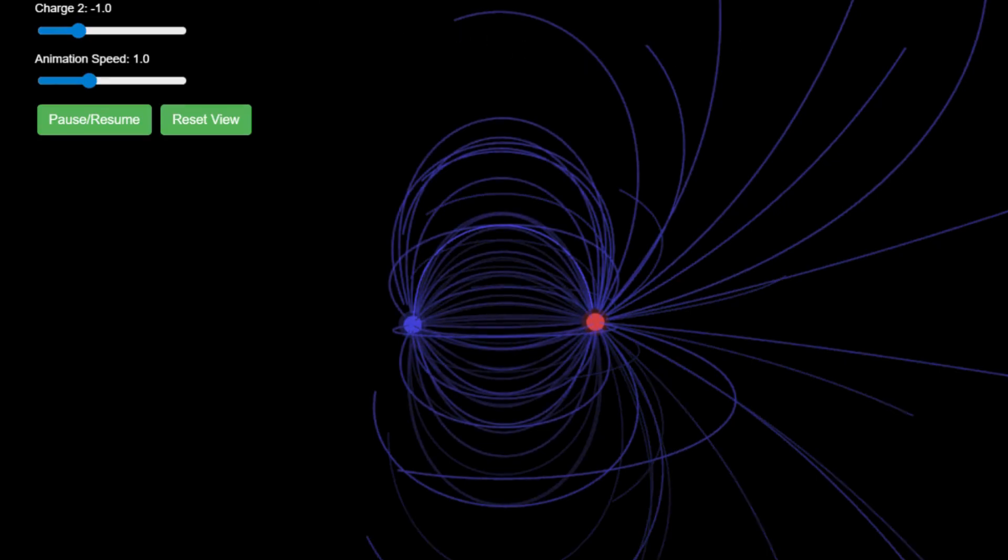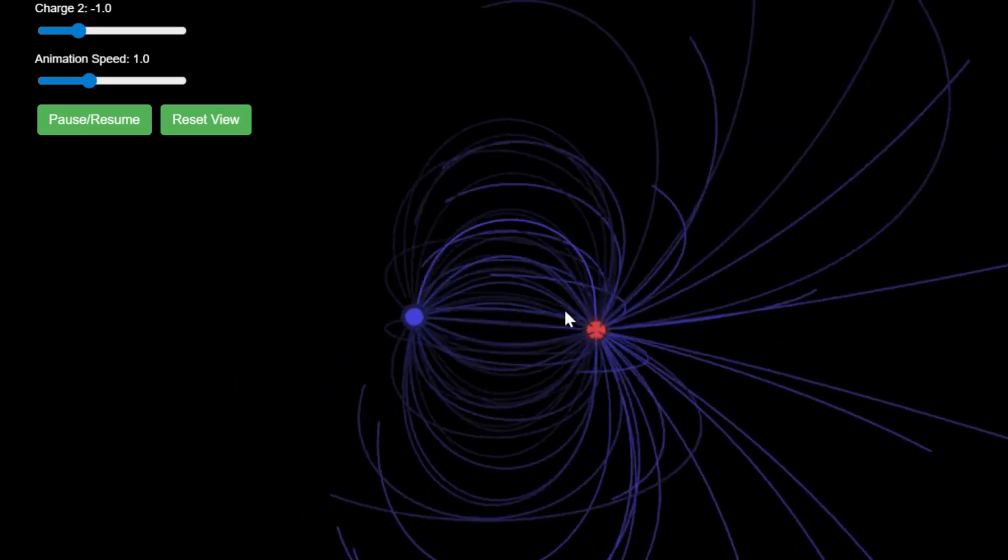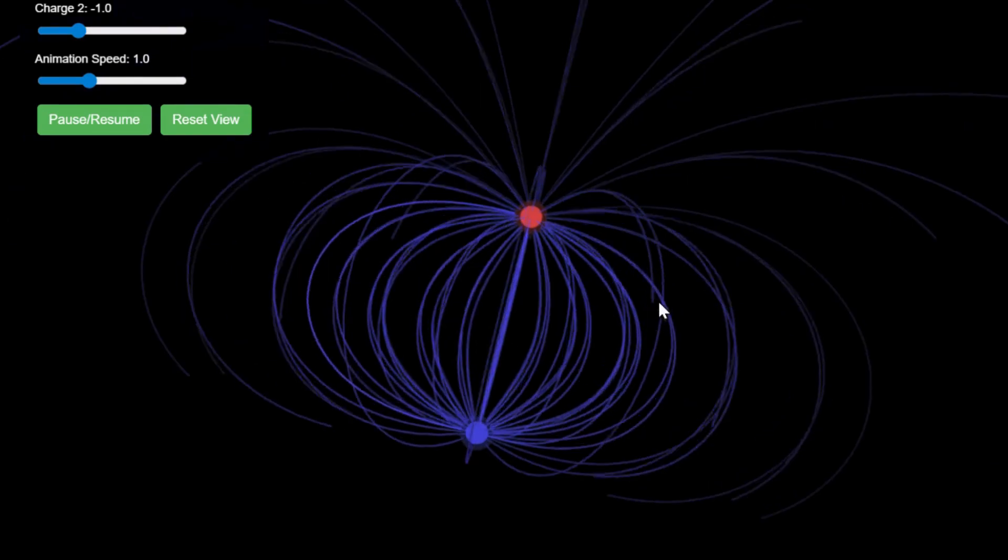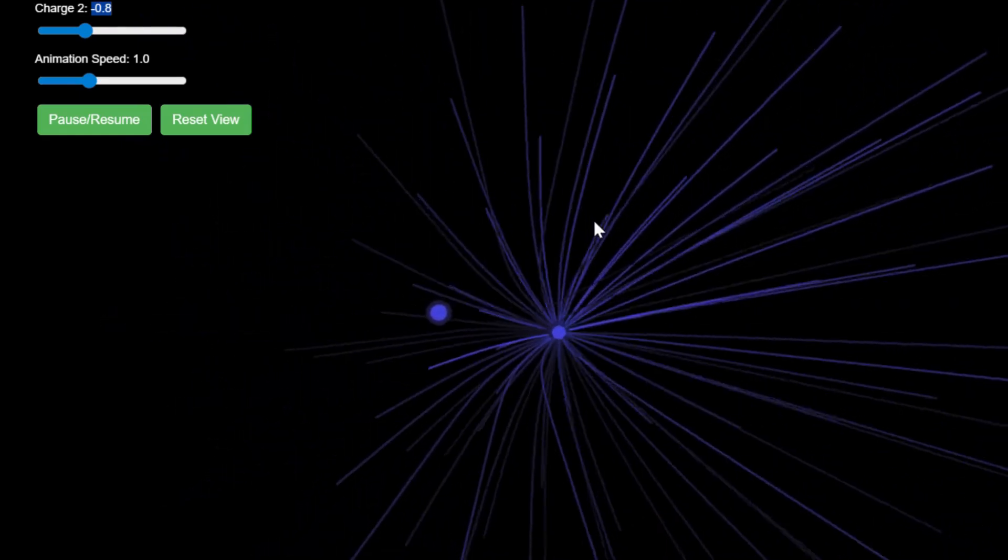In the model, the blue lines represent the electric field lines. If the charge of the positive particle is switched to negative, the electric field connection between the particles disappears.